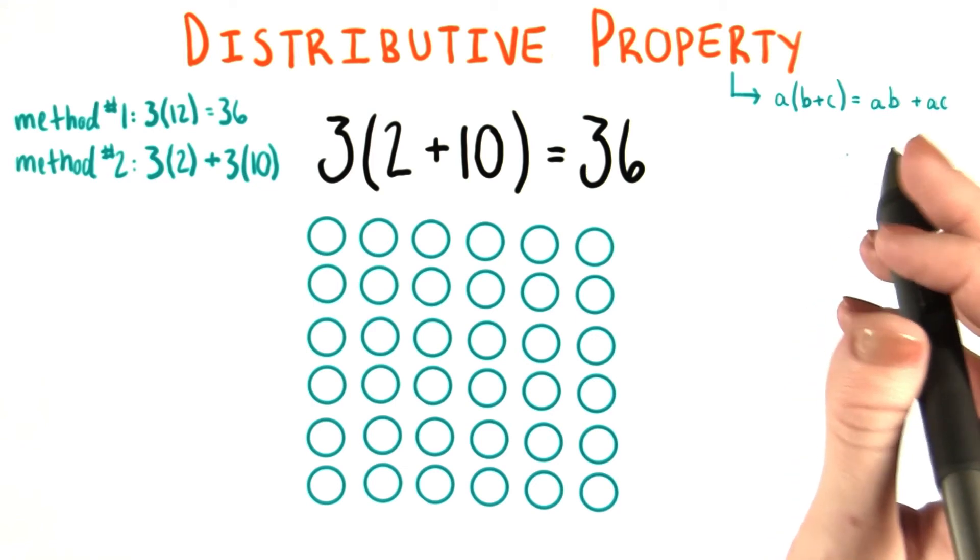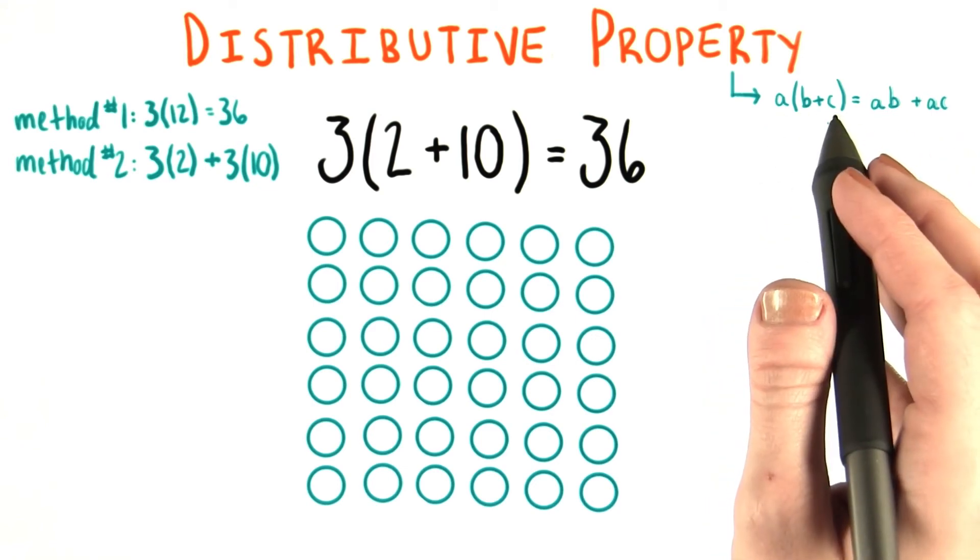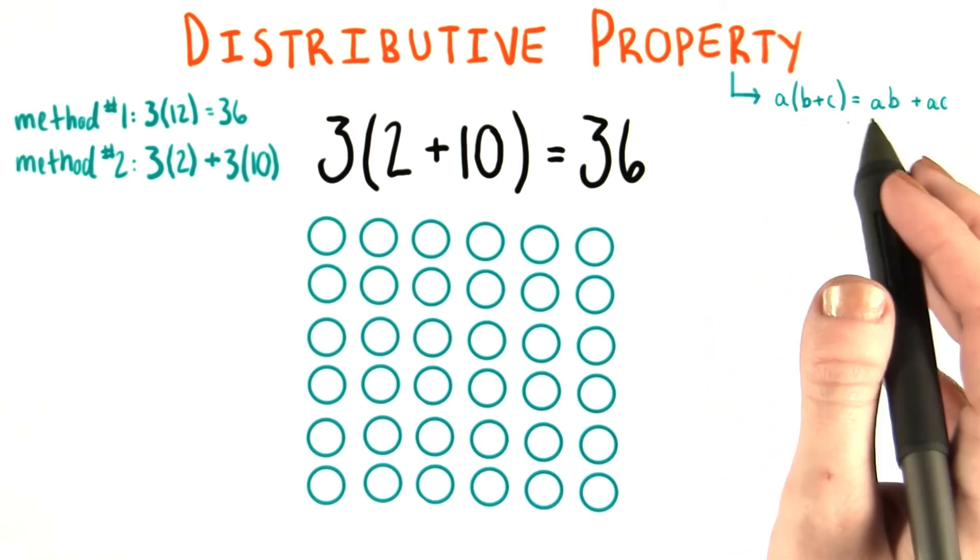I hope this has given you some insight into why we're allowed to distribute multiplication to terms that are added together inside parentheses.